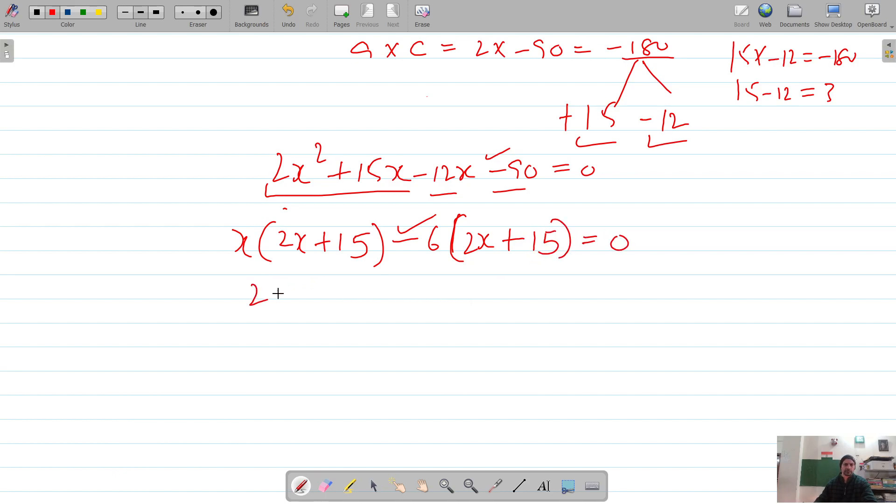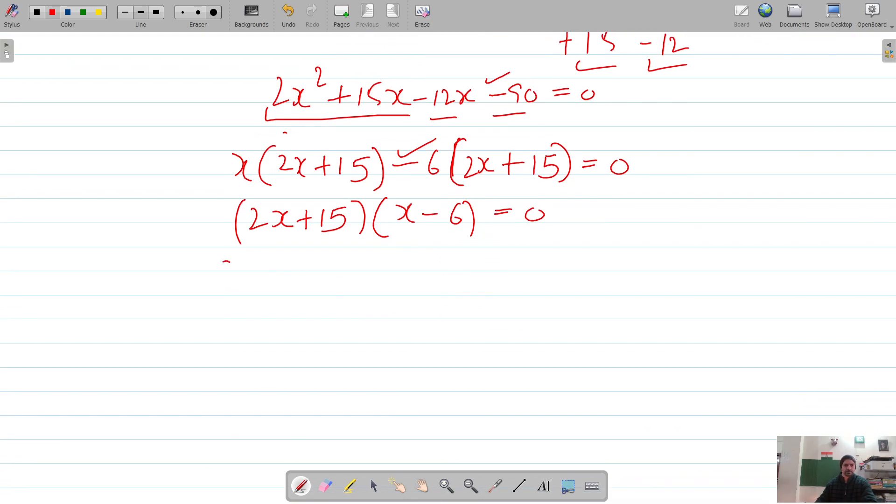So 2x plus 15 equals zero, or x minus 6 equals zero. This gives us x as 6, and this gives us x as negative 15 by 2, which is not possible, so we reject this.